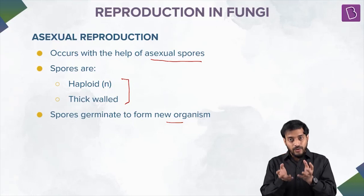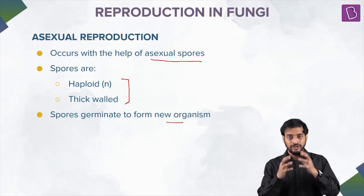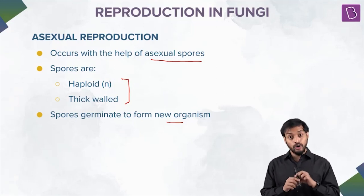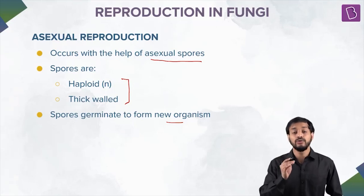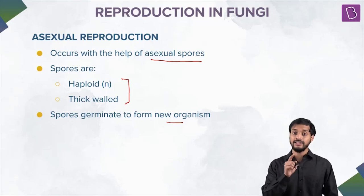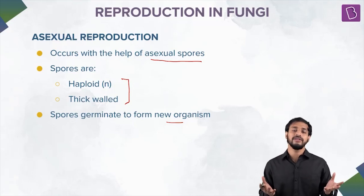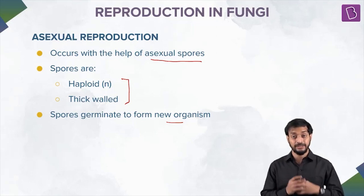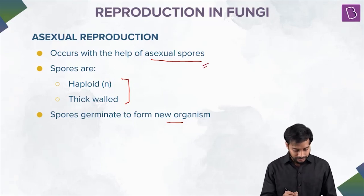At times some spores have hook-like extensions — so these spores can easily attach to the bodies of animals and move, since they cannot move by themselves. The problem is only a tiny percentage of all these spores can actually reach a proper food source. That's why fungi always produce a huge number of spores. This is also the reason why even if you keep your room clean, food kept outside gets spoiled — fungus is present in the air. Formation of asexual spores is a very important characteristic feature.